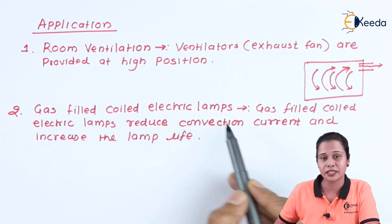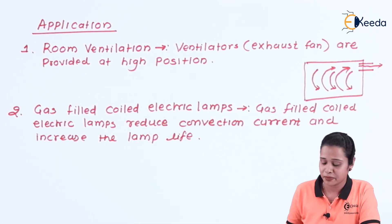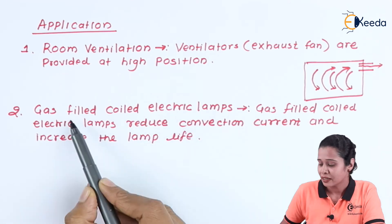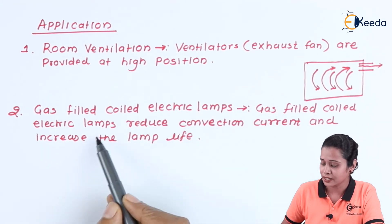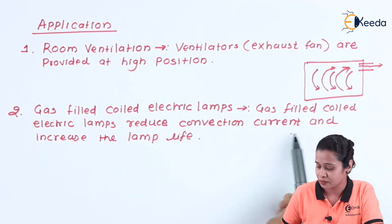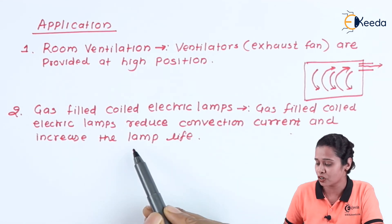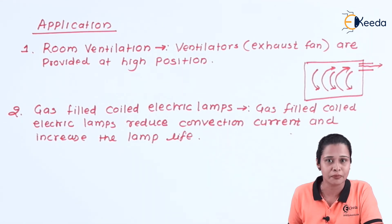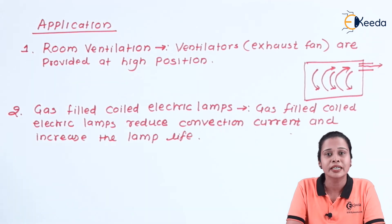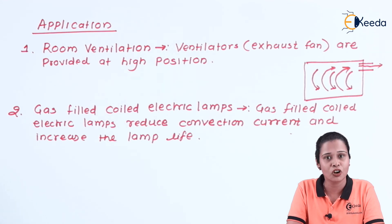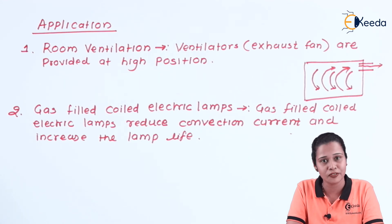The second application is the gas-filled coil electric lamp. A gas-filled coil electric lamp reduces the convectional current and increases the life of the lamp. It reduces the innermost temperature of the lamp, so that heated air will go up and maintain the temperature of the lamp. In this way, we can increase the life of the lamp. These are the applications of convection.